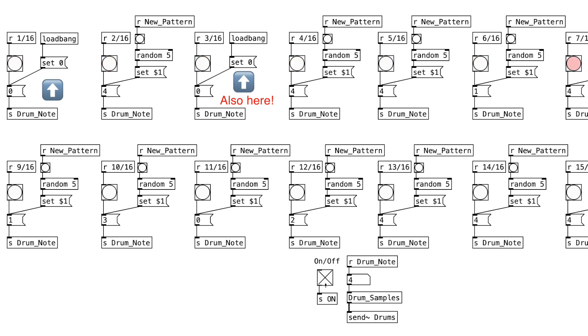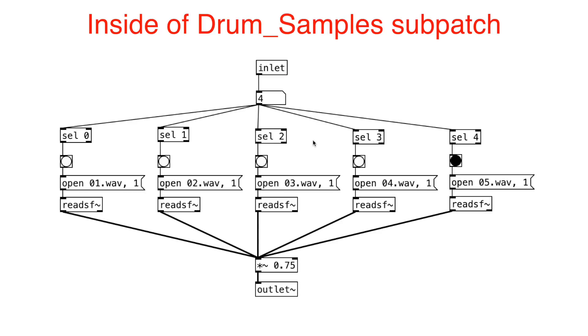I wanted the drum pattern to always start with the kick, so the first note in the sequencer looks like this, unlike the other notes. The random numbers are sent to this subpatch here, which includes the one-shot drum samples.